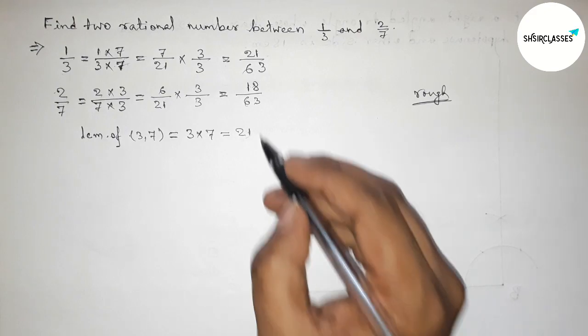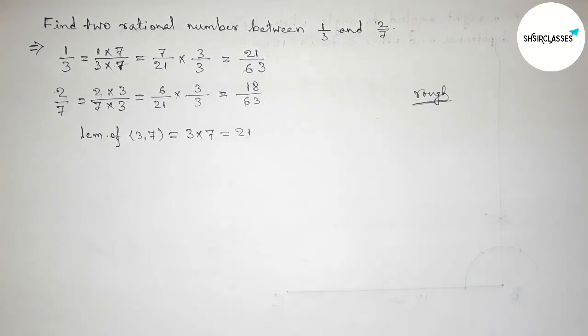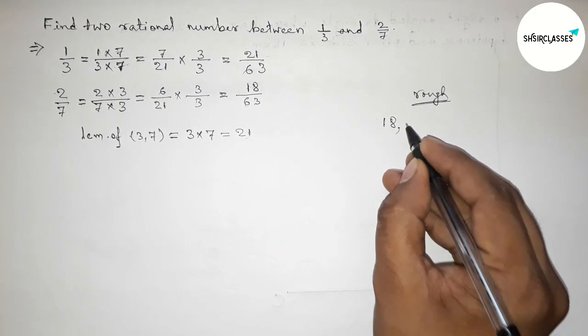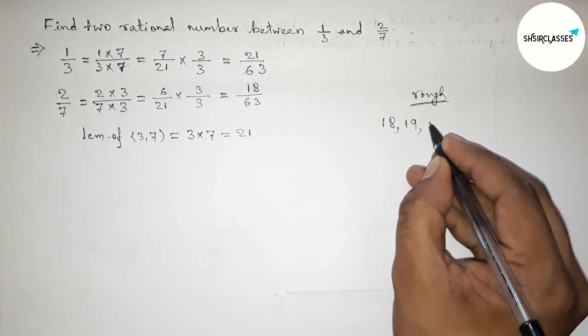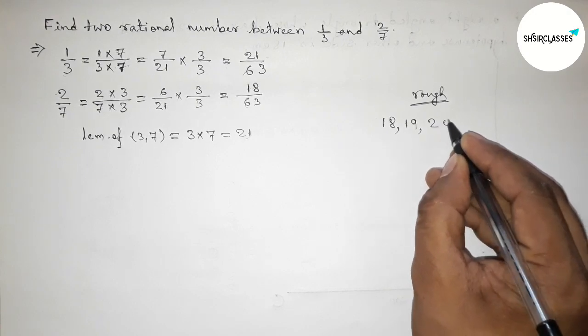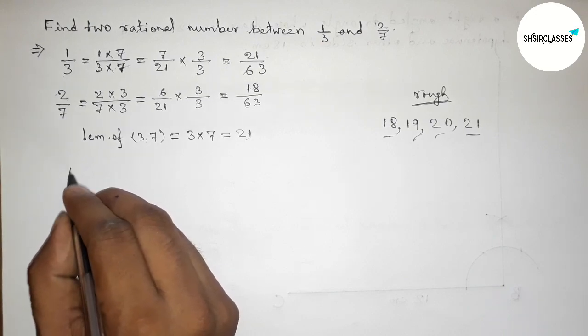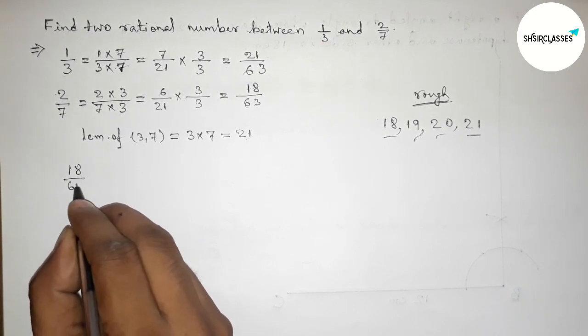Here both the denominators are 63 and equal. So now we can write, between 18 to 21 we can get two integers, 19 and 20, and by these two integers we can form two rational numbers. So first of all write down here all the rational numbers first.